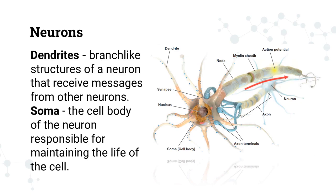Just like any cell in the body, a neuron is also composed of various parts. First, let's talk about the dendrites. As you can see in the image on the right part of your screen, dendrites are the branch-like structures of a neuron that receive messages from other neurons. In order for a neuron to receive a message, the neuron makes use of its dendrites — that's how information from another neuron enters the receiving neuron.